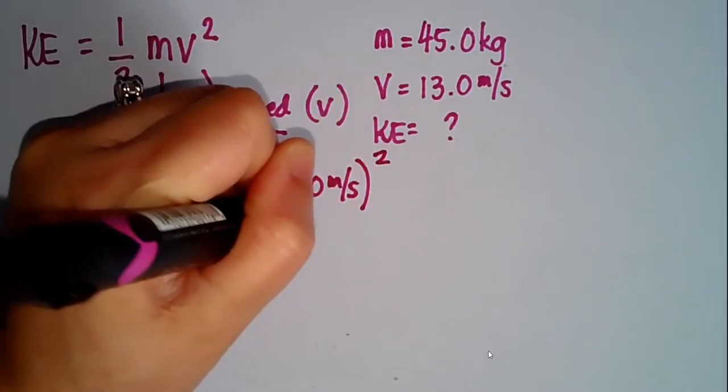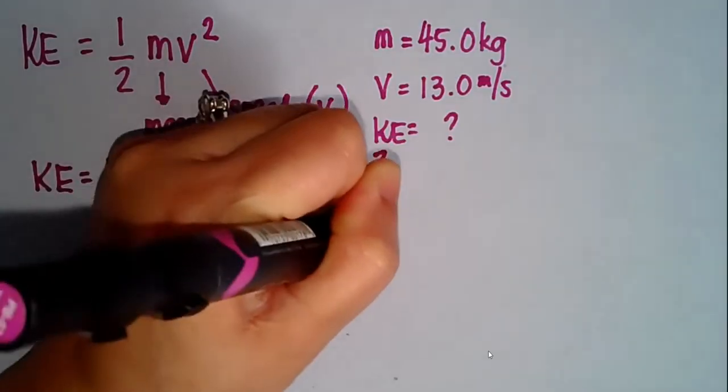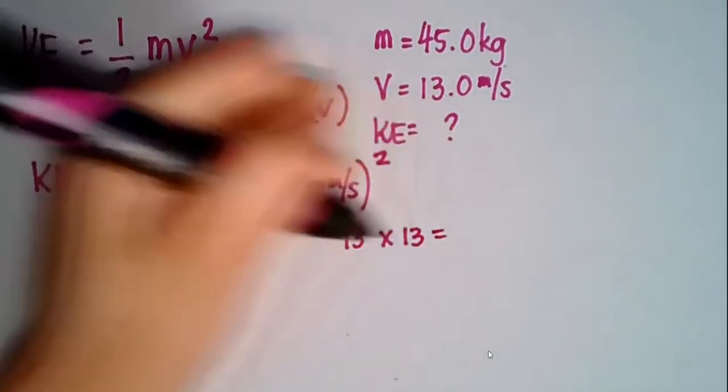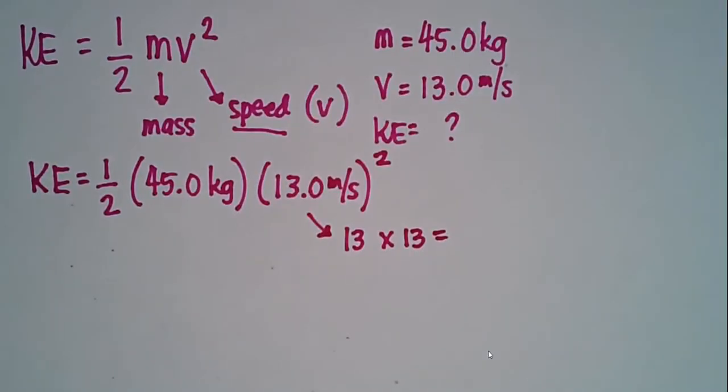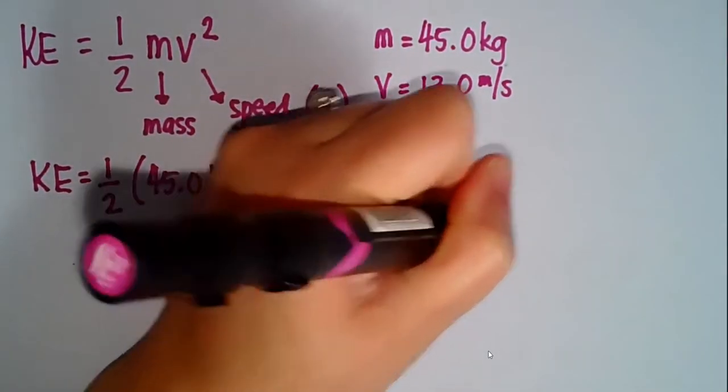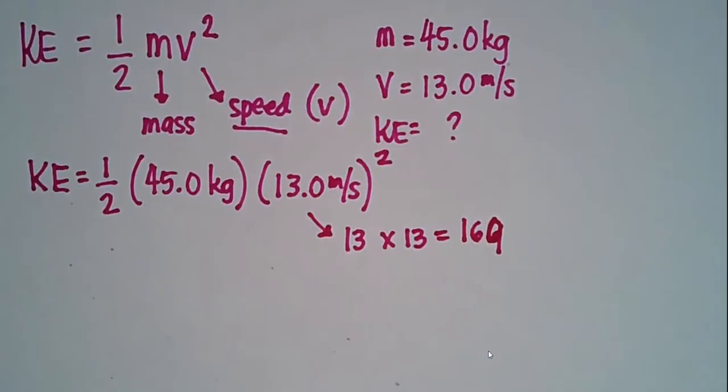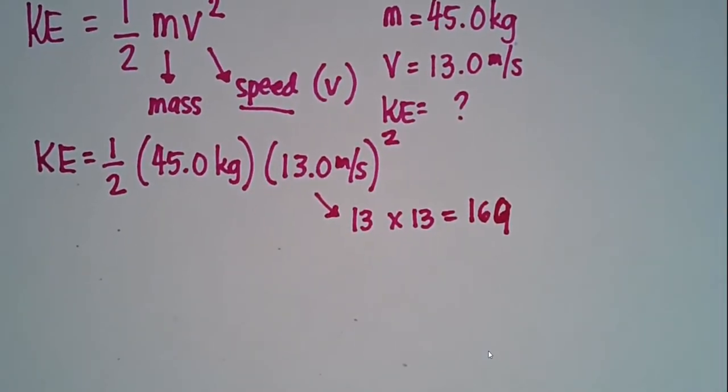So you have 13 times 13 right here, which will give you, if you go ahead and get your calculator, that will give you 169. So that's 169 right there.